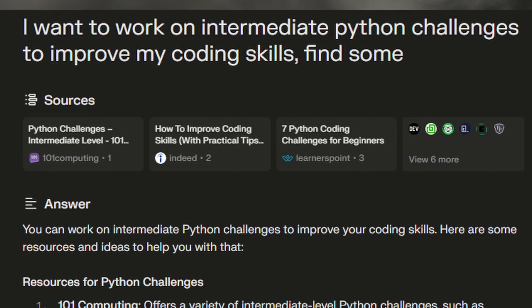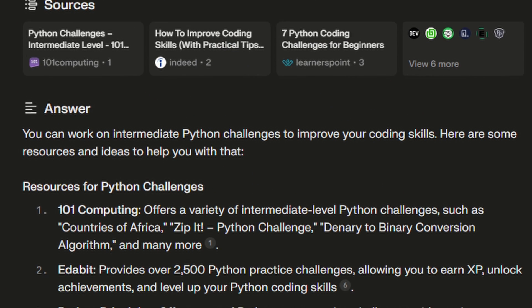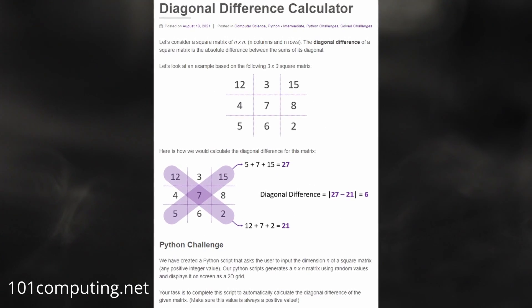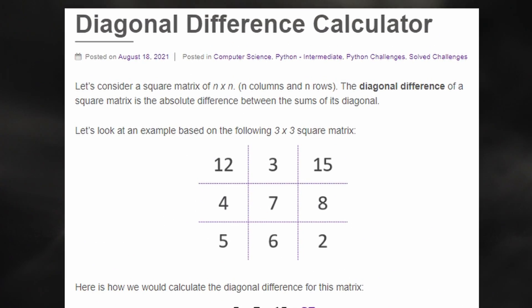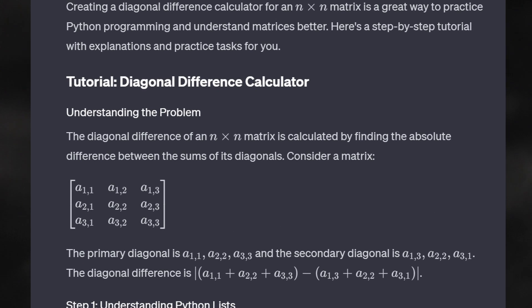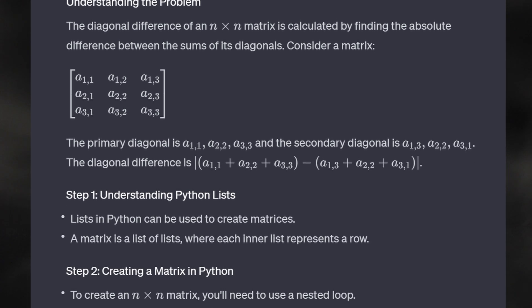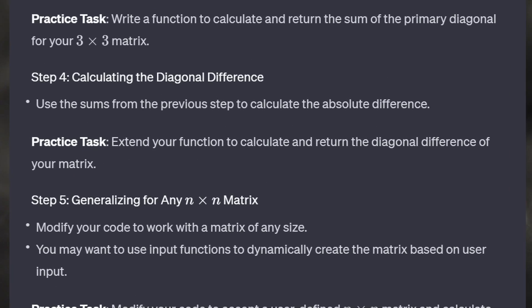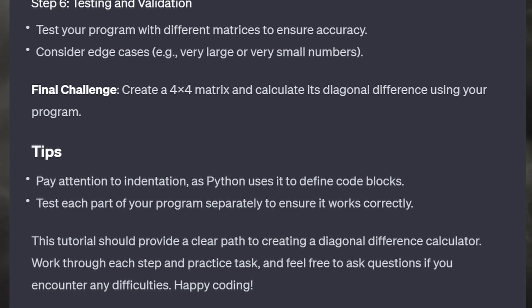Now use Perplexity AI to search for intermediate challenges. They'll probably be too difficult, but don't worry. When you've found one — like this one on calculating the diagonal difference — ask ChatGPT to create a tutorial based on that challenge which breaks it down and asks you questions to test your understanding. Creating a diagonal difference calculator for an n by n matrix is a great way to practice Python programming and understand matrices better. Here's a step-by-step tutorial with explanations and practice tasks for you. Keep working through challenges this way — you'll learn a lot very quickly.